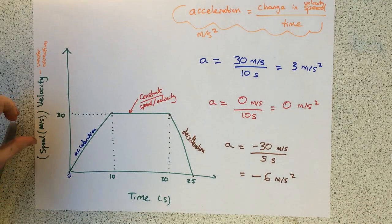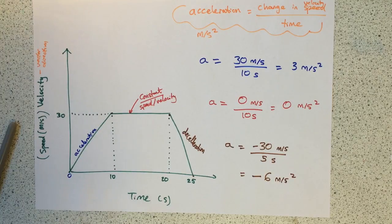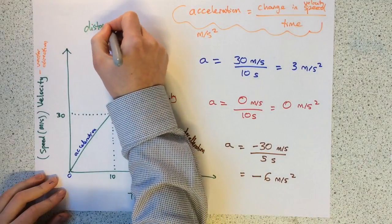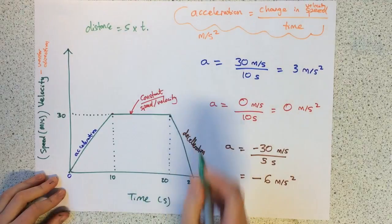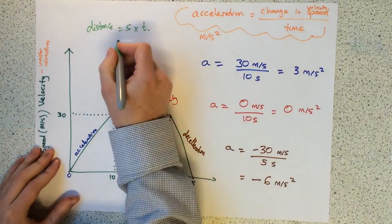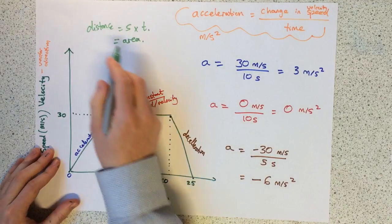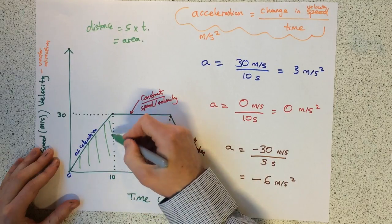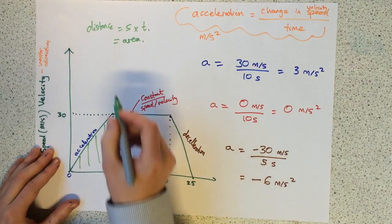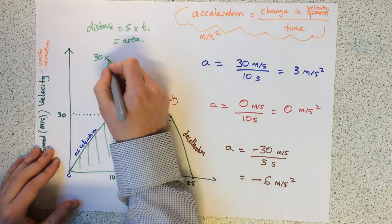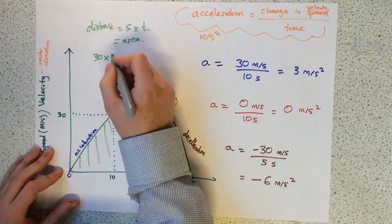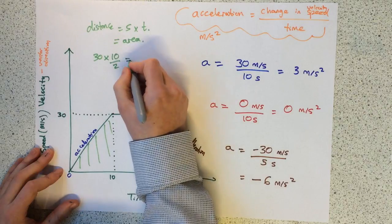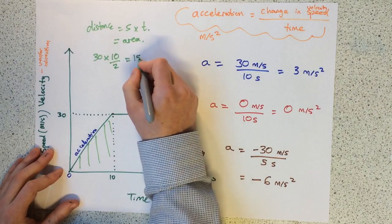The last thing we can do with this speed-time graph is we can work out distance. To do distance, we do speed times time. If we did speed times time, this is working out the area. So the distance is the area. The distance travelled in the first 10 seconds would be the height, which is 30, times the base, because it's a triangle, times 10 over 2, because it's half base times height. Therefore, the distance travelled in the first section is 150 metres.